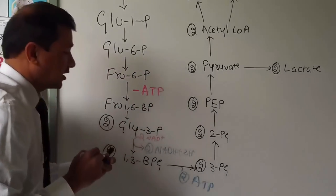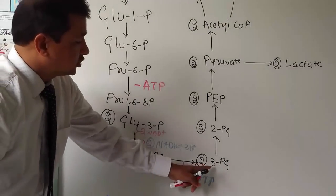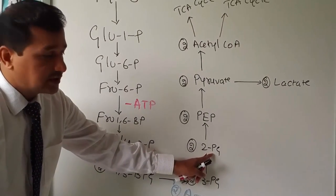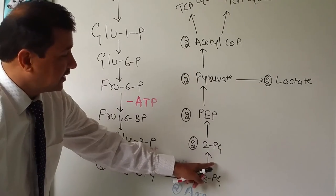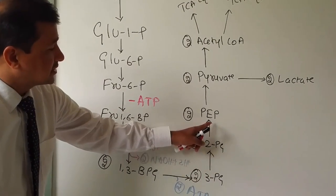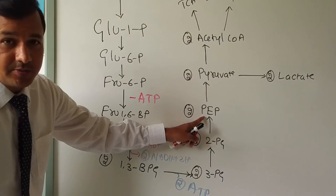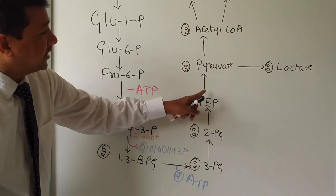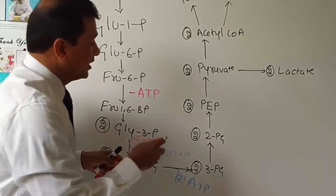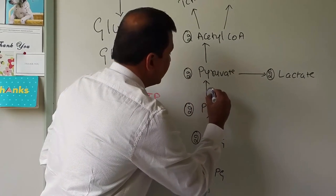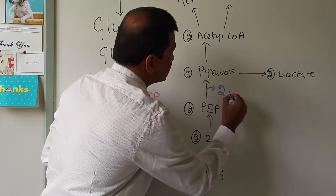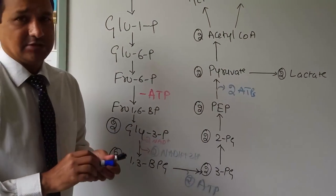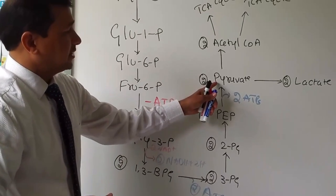2 molecules of 3-phosphoglycerate are converted to 2 molecules of 2-phosphoglycerate — no energetics there. Then 2-phosphoglycerate molecules are converted to 2 pyruvate molecules, generating 2 more ATPs at this stage via substrate-level phosphorylation.